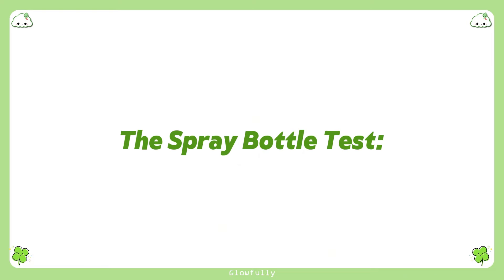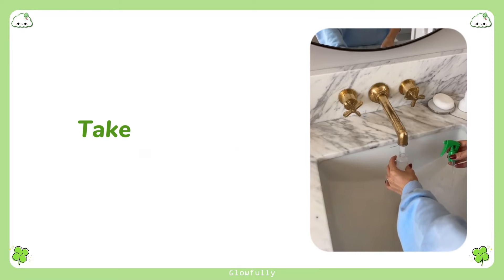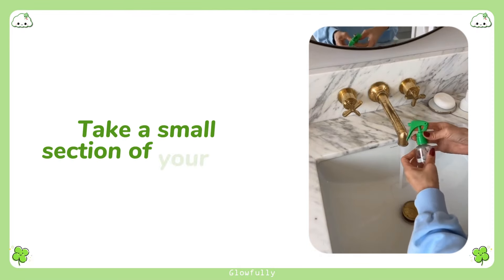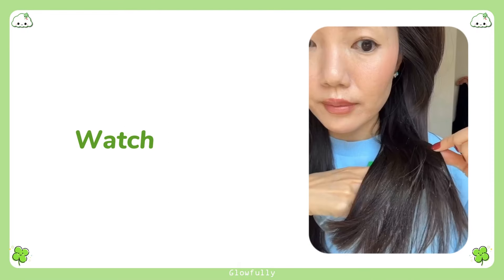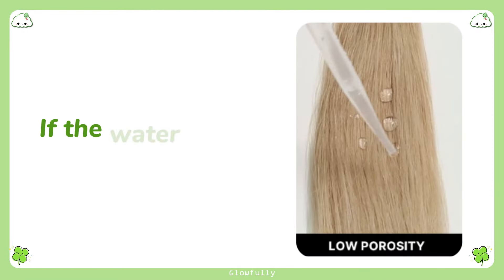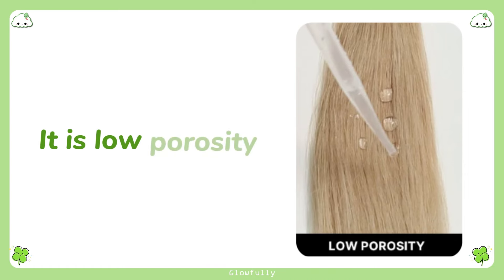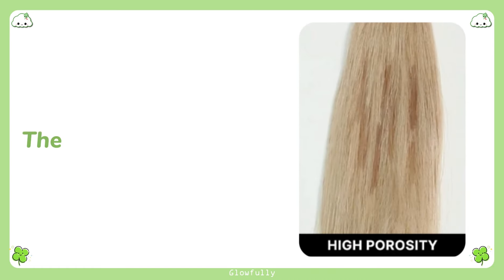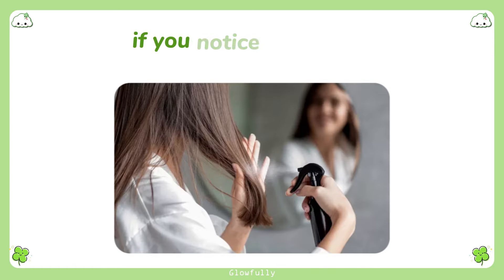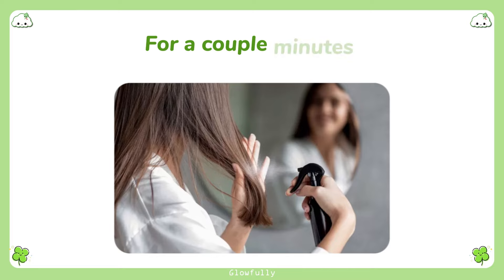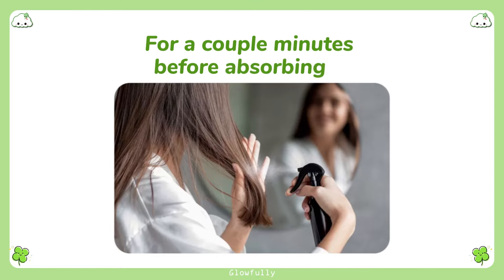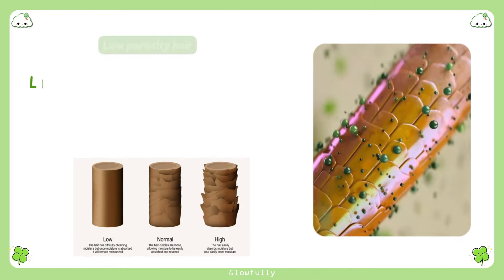The spray bottle test: take a small section of your hair and mist it with some water from a spray bottle. Watch closely. If the water beads up on the hair, it is low porosity. If the water absorbs quickly, the hair is high porosity. If you notice the water sitting on the hair for a couple minutes before absorbing in, the hair is medium porosity.